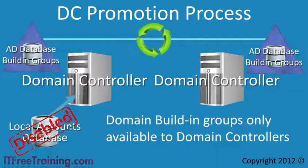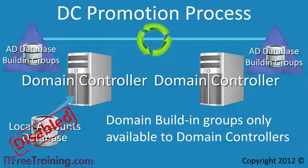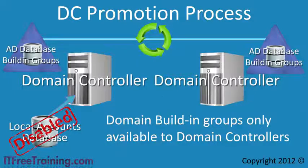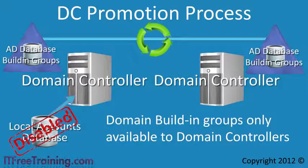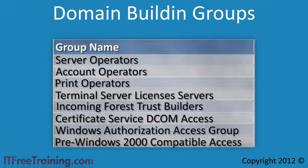What this essentially means is that if you make a change to a built-in group stored in Active Directory, the change will affect all domain controllers in your domain. All domain controllers share the same built-in groups — you cannot make a change to a built-in group for one domain controller and have it affect only one domain controller; it is all or nothing. If you have a member server — a server that is a member of the domain but not a domain controller — built-in groups work the same as they would on a client operating system like Windows 7. The only time the functionality of these groups changes is when the server is promoted to a domain controller.